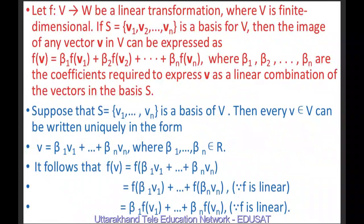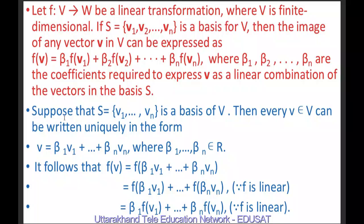Let F be a mapping from V to W, a linear transformation where V is finite-dimensional — meaning its basis has a finite number of elements. If S = {V1, V2, ..., Vn} is the basis for V, then the image of any vector in V can be expressed as F(v) = β₁·F(V1) + β₂·F(V2) + ... + βn·F(Vn), where β₁, ..., βn are the coefficients expressing v as a linear combination of the basis.